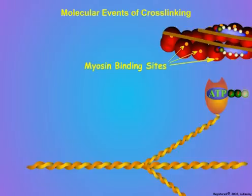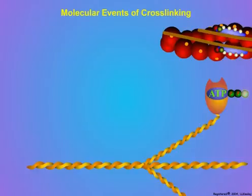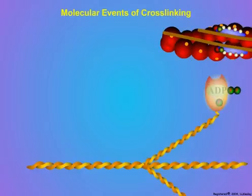This frees the actin molecules to bind the myosin head units. The contraction cycle starts with the myosin head bound to adenosine triphosphate, ATP. The myosin head contains adenosine triphosphatase, an enzyme that splits the high-energy phosphate bond of ATP to produce adenosine diphosphate, ADP, and inorganic phosphate. The resulting ADP and inorganic phosphate remain associated with the myosin head, which is also charged with the energy released by the splitting of the high-energy phosphate from the ATP.